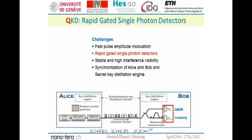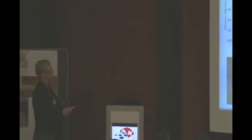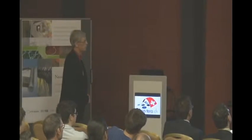The detectors need to be open for very short times, as you can see on this graph. There are windows of 130 picoseconds with a distance of 1.25 gigahertz at which these detectors can open to see whether a photon has been sent and arrives at the end. This is done with a Peltier-cooled gallium arsenide diode and this system has very good quality. The maximum detection rate is around 100 megahertz but the gate rate where photons can arrive is 1.25 gigahertz.